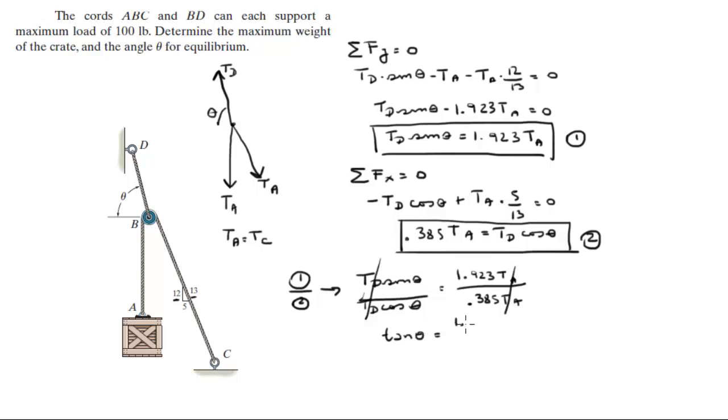And sine of theta over cosine of theta is equal to tangent of theta, is equal to 1.923 over 0.385. So now we solve for theta, and we get that theta is equal to 78.7 degrees. So now we have found theta for equilibrium.